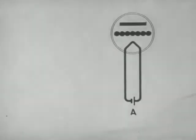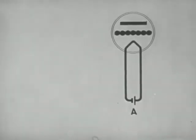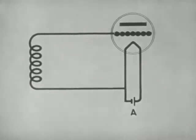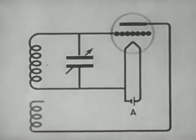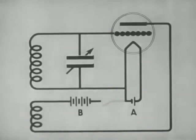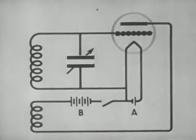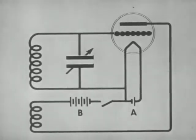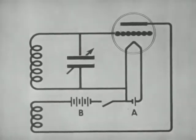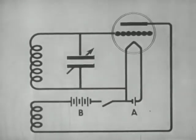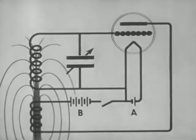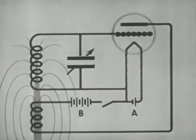The vacuum tube is also used in the transmission or sending station to generate radio frequency currents. In a tickler type oscillator, the grid circuit contains a coil and a variable condenser. The plate is connected through a coil, B battery, and a key to the filament circuit. When a current flows through the plate coil, the magnetic field of this coil sweeps across the grid coil and induces a voltage in it. This happens when the key is pressed.